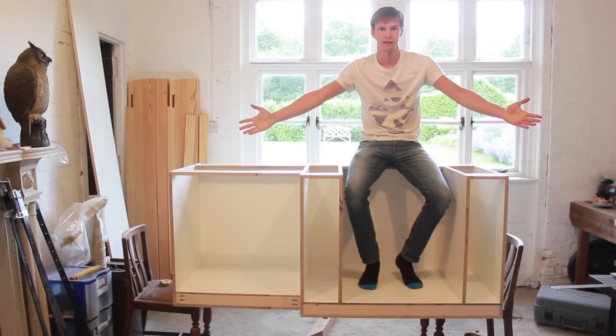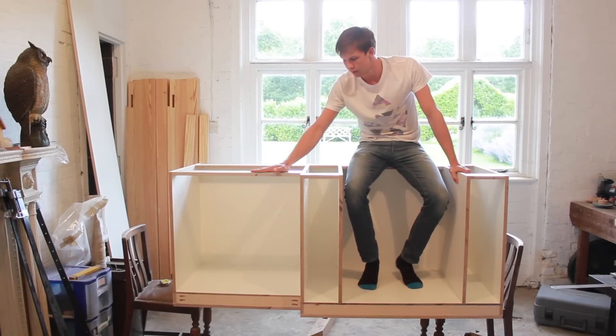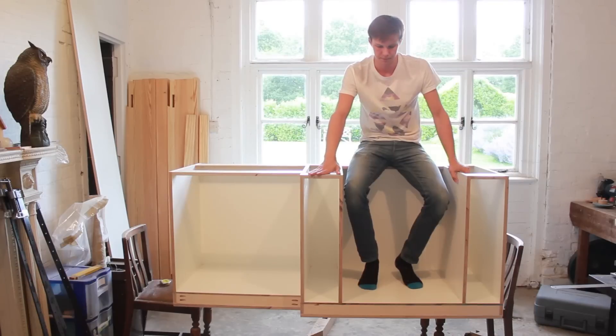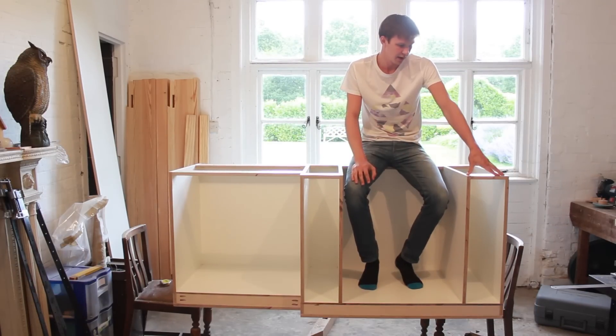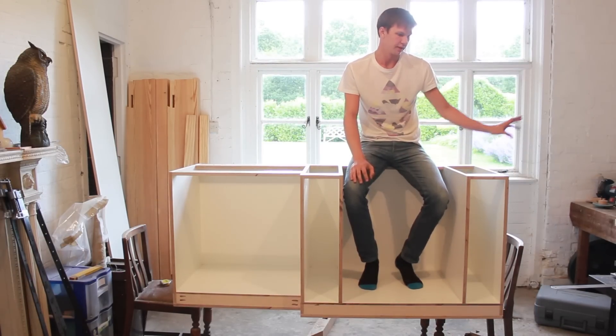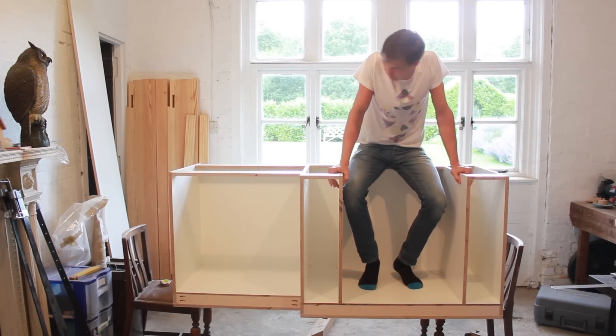So here's the finished unit for the sink side of the kitchen. As you can see we've got a cupboard here, we've got a pull-out larder, we've got the sink area with a cupboard underneath and then another pull-out larder on the end. Dishwasher will go off to the end there but that'll be a separate unit so that's not included.